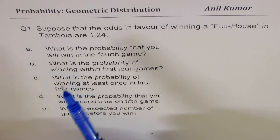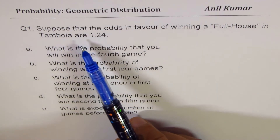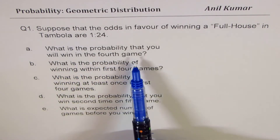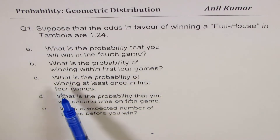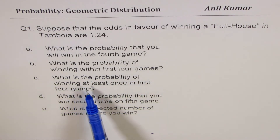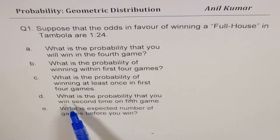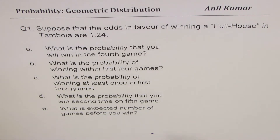The question is: suppose that the odds in favor of winning a full house in Tambola are 1 to 24. We'll answer five parts — what is the probability that you will win in the fourth game; within first four games; at least once in first four games; that you win the second time on the fifth game; and the expected number of games before you win. This covers 90% of problems related to geometric distribution.